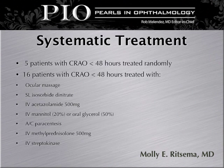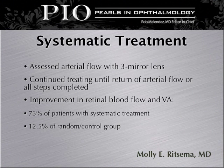Systemic treatment includes 5 patients with CRAO less than 48 hours treated randomly and 16 patients with CRAO less than 48 hours treated with ocular massage, isosorbide dinitrate, IV Diamox, IV mannitol, AC paracentesis, and IV methylprednisolone. Arterial flow was assessed with a three-mirror lens, and treatment continued until return of arterial flow or all steps completed. Improvement in retinal blood flow and visual acuity was shown in 73% of patients with systemic treatment versus 12.5% in the control group.